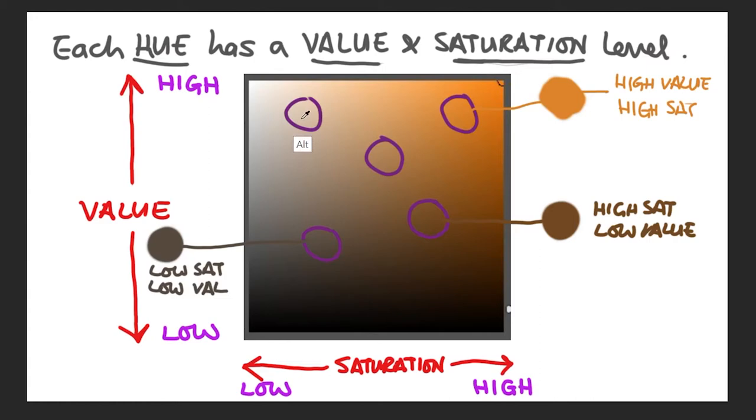The third example is low saturation, low value. And you can see it has very little color, and it is quite dark. And the fourth one, high value, low saturation. So you can see it's quite light, and not very much color. And the fifth one, mid saturation, mid value. So it's not particularly bright colored. And it's not particularly dark or light. It's mid tone.